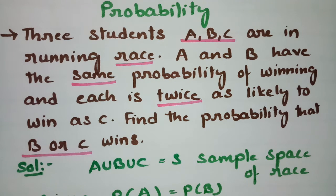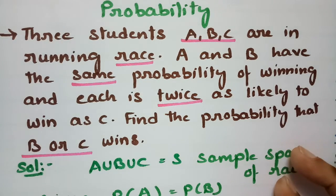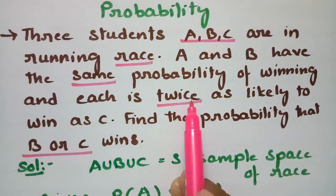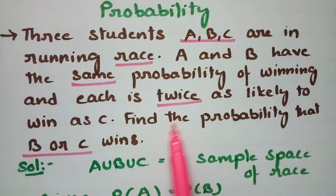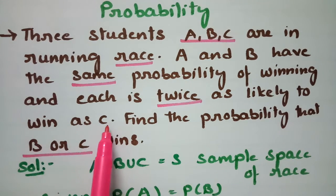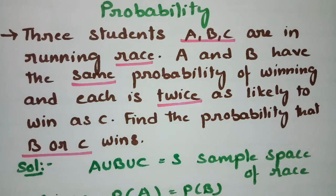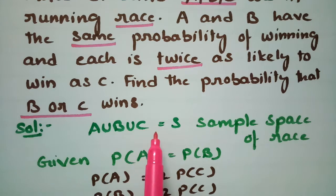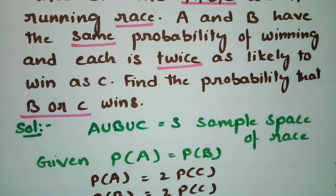There are three students A, B, C in a running race. A and B have the same probability of winning, so P(A) equals P(B). A union B union C equals the sample space of the race.